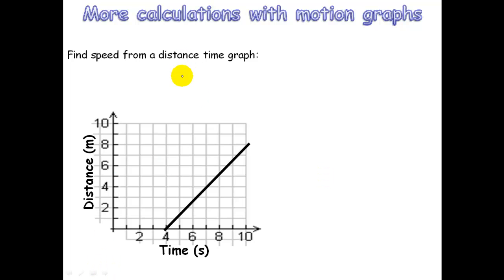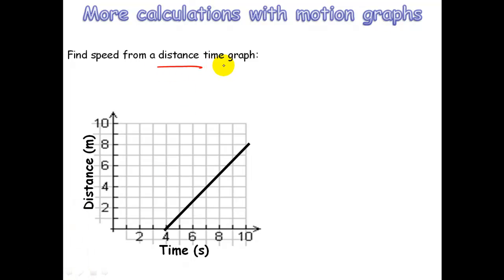Finding the speed from a distance-time graph. The first time you ever look at a graph, the first thing you should do is look at the axes and work out what the graph is of. Students always make mistakes because they assume they're looking at a distance-time graph when actually it's a speed-time graph, or vice versa. So always make sure you read and check the units of the graph.